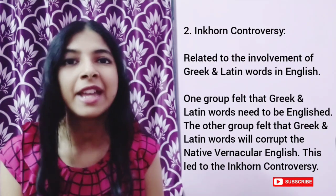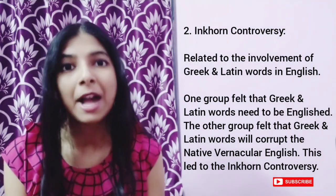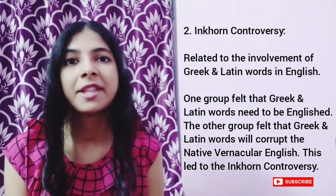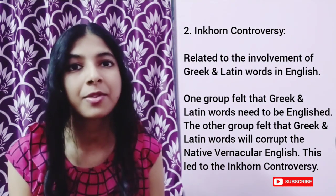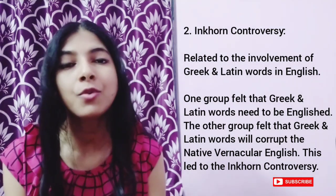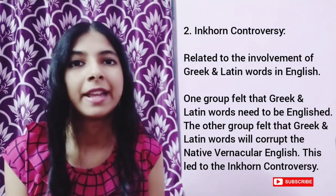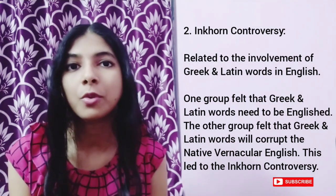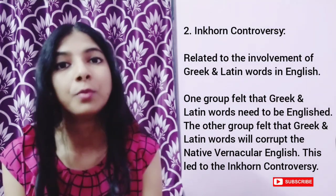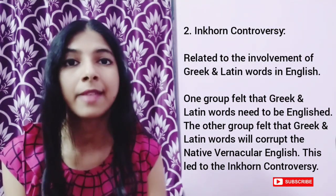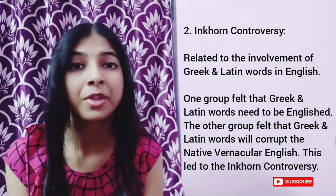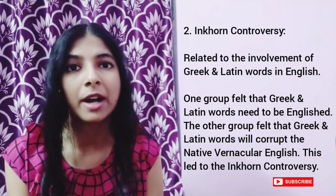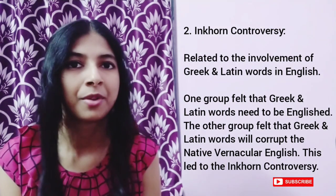Next is the Inkhorn controversy. This passion for classical learning became a danger to the English language. The Inkhorn controversy was based on the inclusion of Greek and Latin words in the English language. There was one group that believed Greek and Latin words need to be Englished — made into English words. And there was another group that believed Greek and Latin words would corrupt the native vernacular English. This led to the Inkhorn controversy.